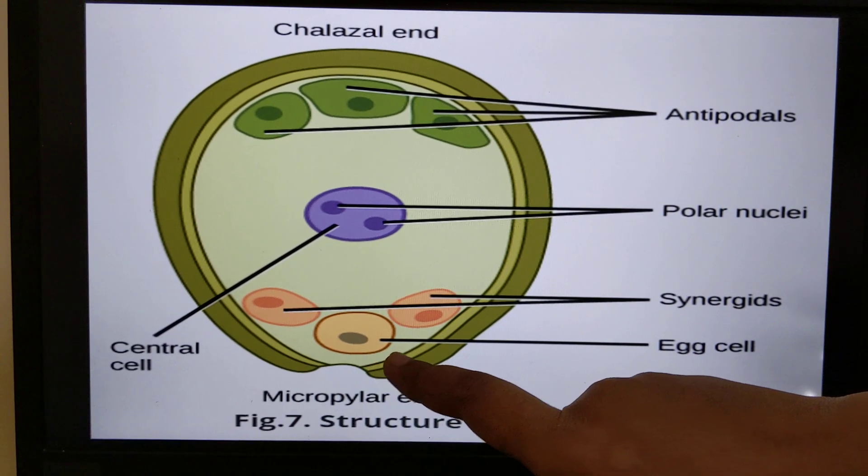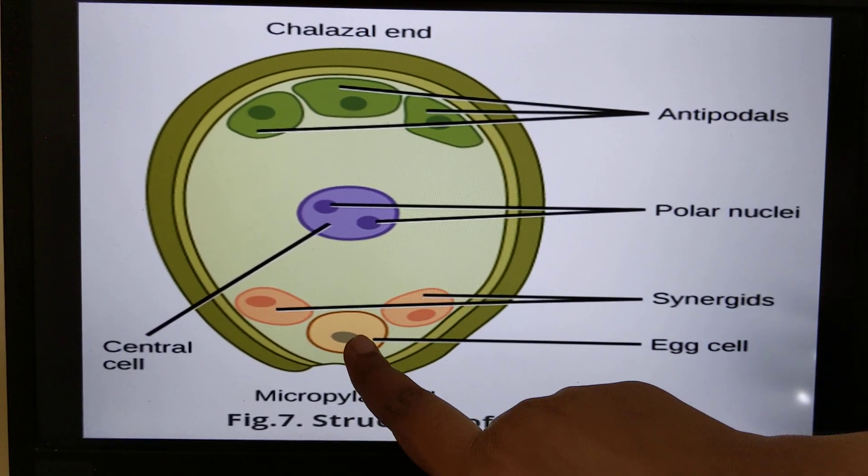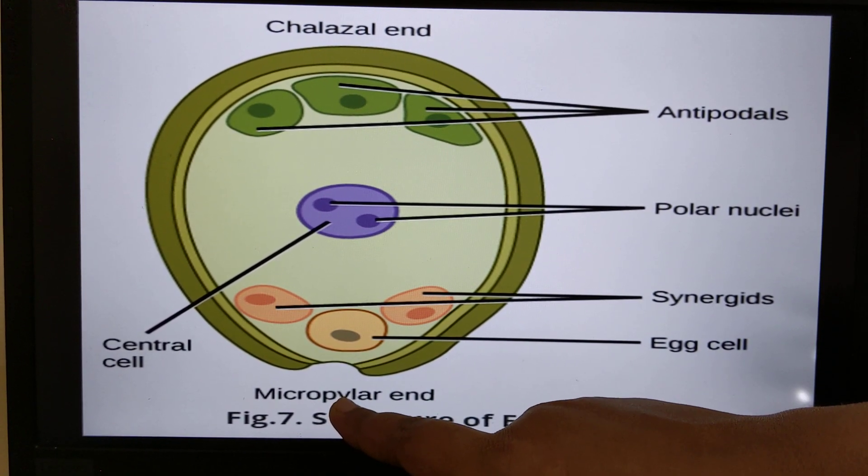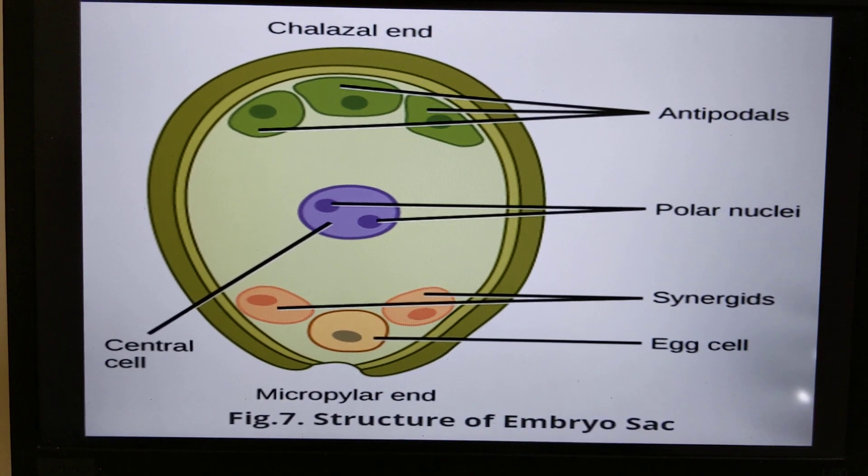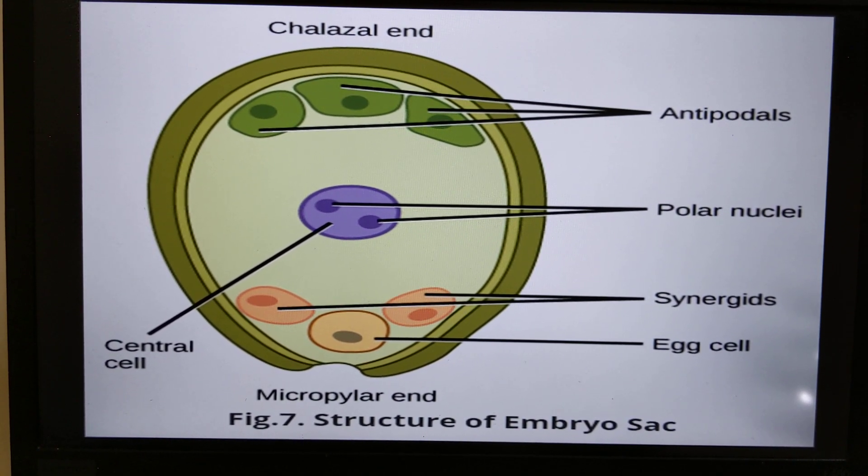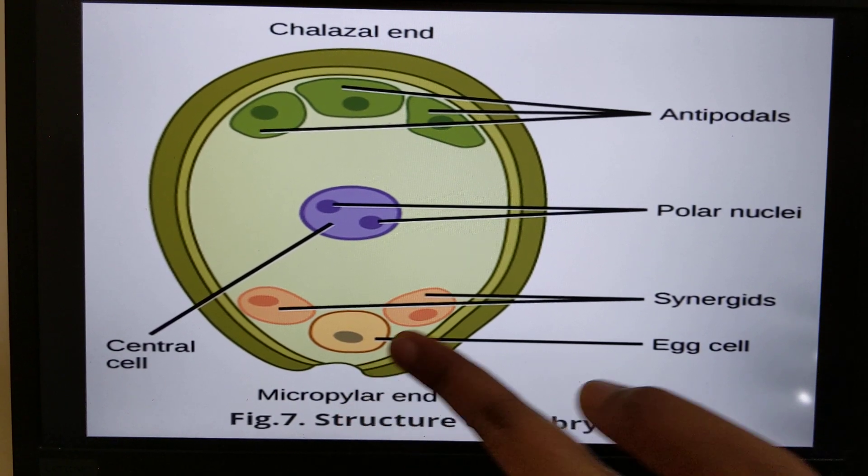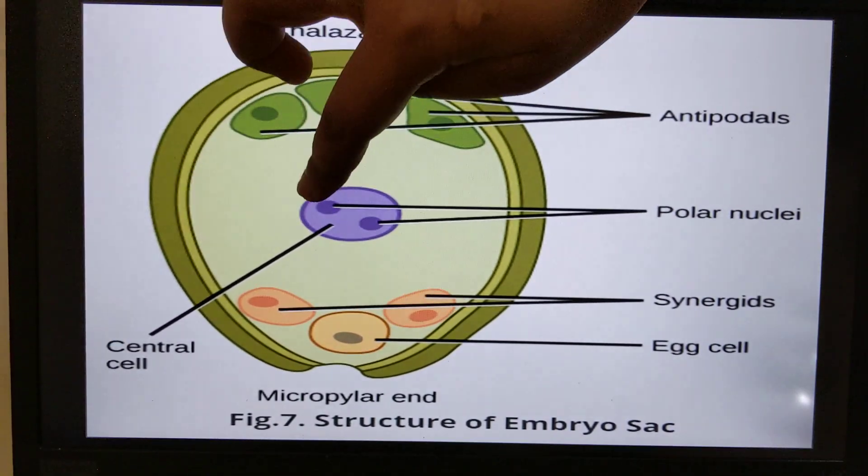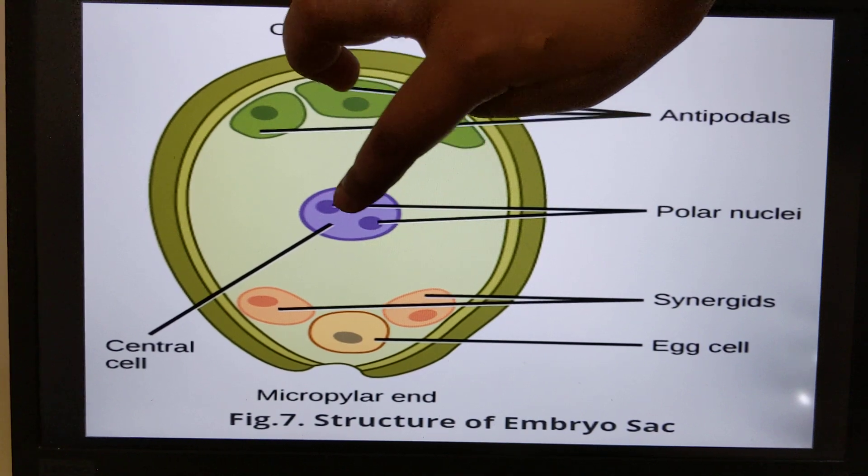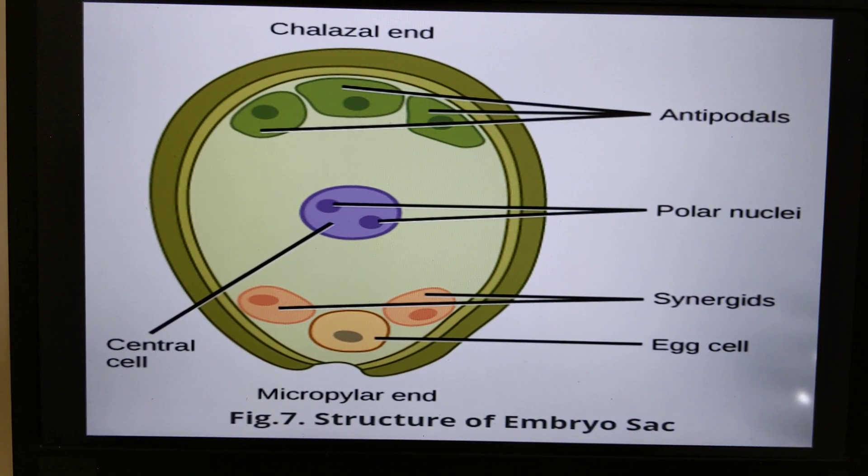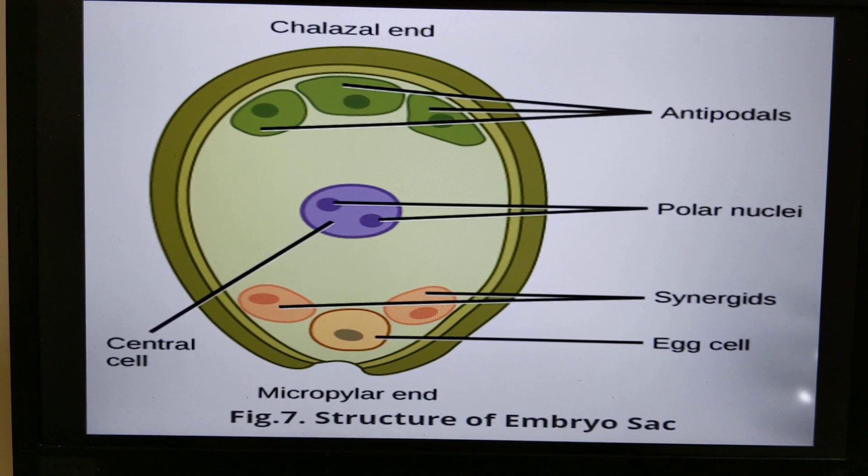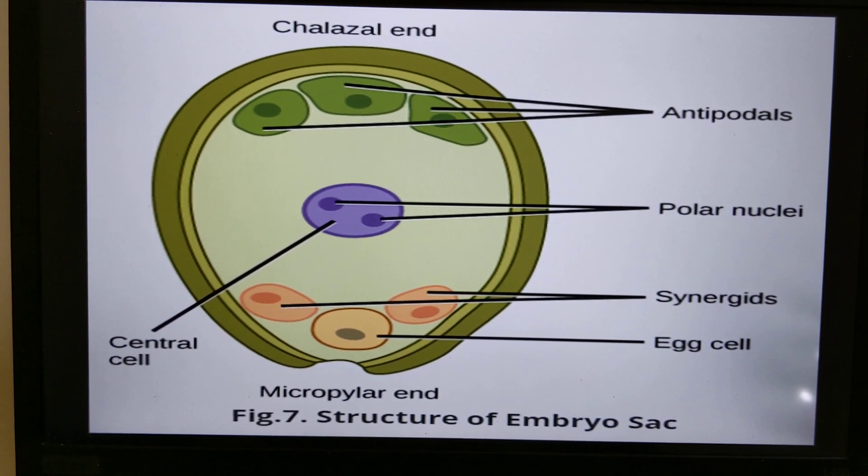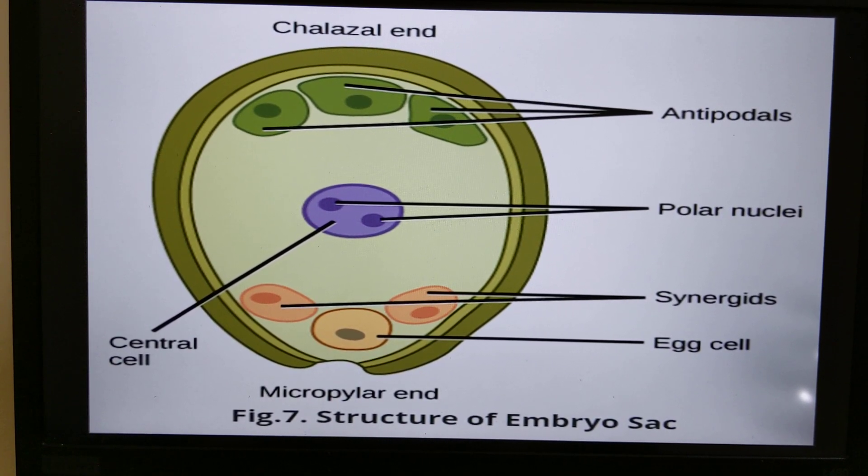The most functional thing which is very important for fertilization is the egg cell, or you can call it ovum. It is also present towards the micropylar end. The antipodals are present towards chalazal end. In the center is the central cell which contains the polar nuclei. I will tell you when we study fertilization how the pollen tube enters and how fertilization takes place in angiosperms. This is one of the most important concepts in angiosperms.